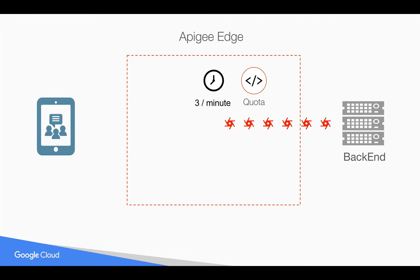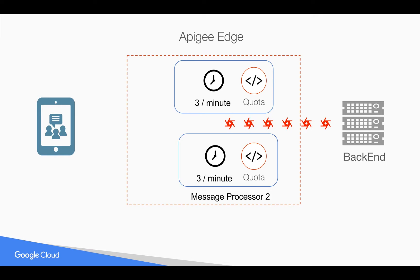The reason behind that is the policies in Apigee Edge actually execute in an environment called message processors, and each Apigee Edge instance comes with two message processors by default. That is the reason when you said three per minute, it actually allowed six API calls to the backend within a minute — because message processors maintain their own counters in each environment, so each message processor has its own counter.